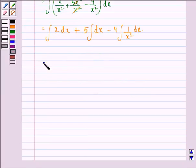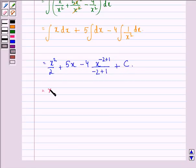Now this can be written as x²/2 + 5x - 4 times x^(-2+1)/(-2+1) + C.